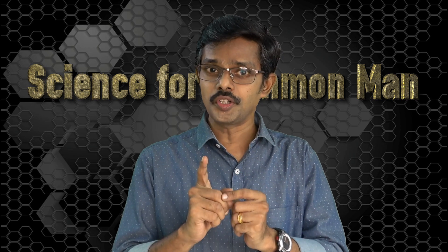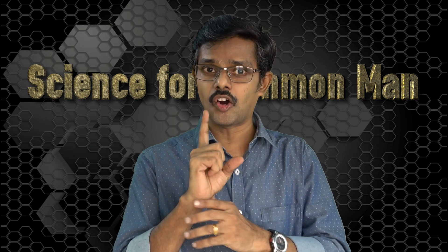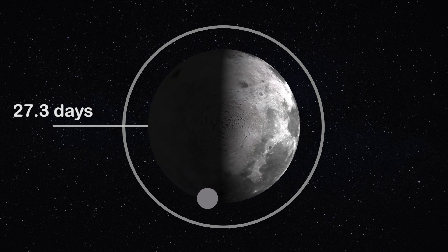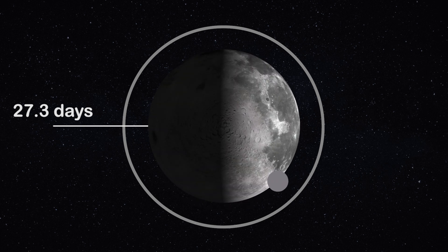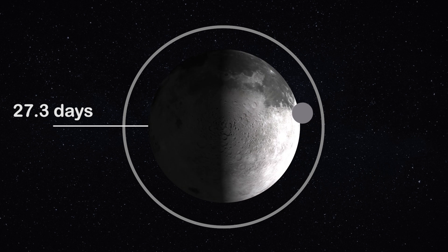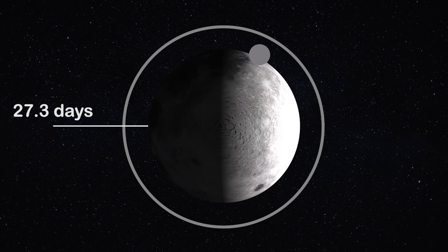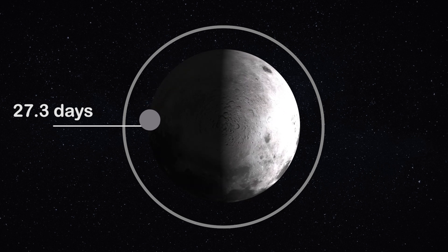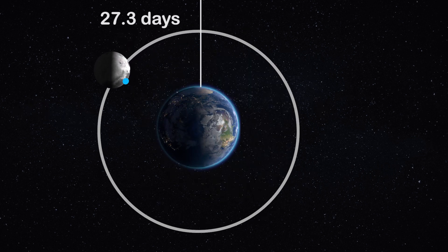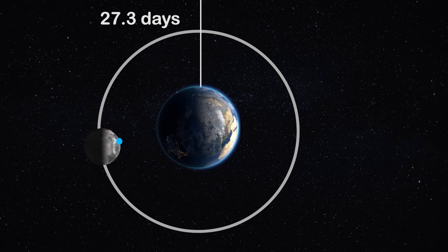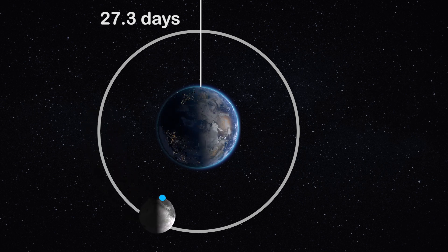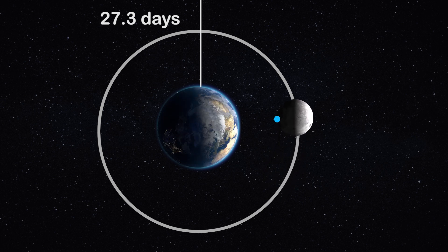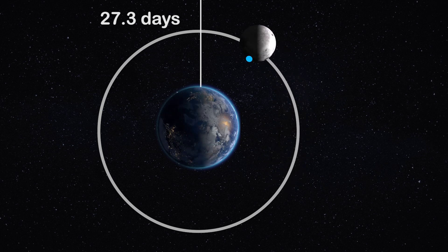Another interesting fact is that the Moon is also spinning on its own axis, and the time taken for the Moon to complete one rotation on its own axis is also 27.3 days. That means when the Moon revolves around the Earth and completes one complete revolution in 27.3 days, by that time the Moon would have completed one complete rotation on its own axis as well.